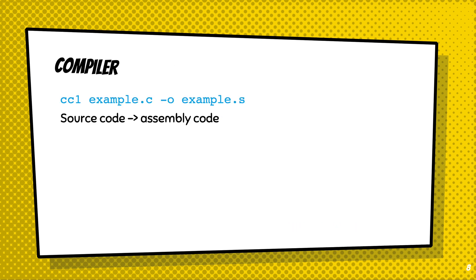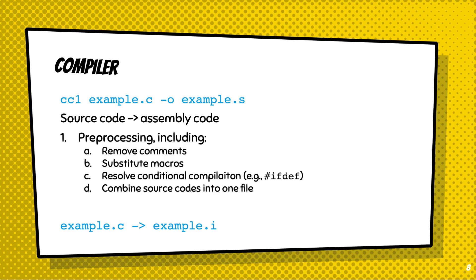So the first step of gcc is to compile the source code. In this step, source code will be transferred to assembly code. Instead of running gcc, we can use the specific command in the collection, cc1, followed by example.c -o example.s. The compilation process is also composed of two steps.